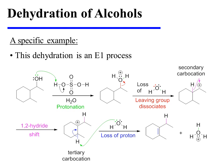Generic mechanisms for these reactions can be found in the videos on the E1 and E2 reactions, so we'll simply begin here with a specific example. In this example, the alcohol is first protonated by sulfuric acid. This creates an oxonium ion, which is a good leaving group, and so water dissociates from the substrate because it is able to leave behind a reasonably stable secondary carbocation intermediate.